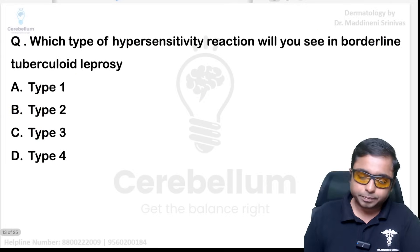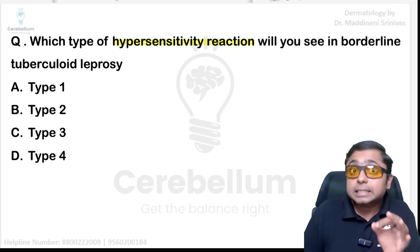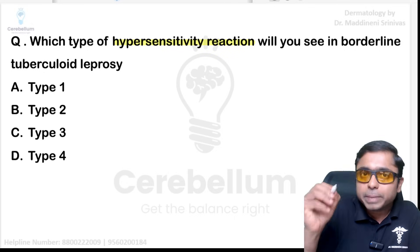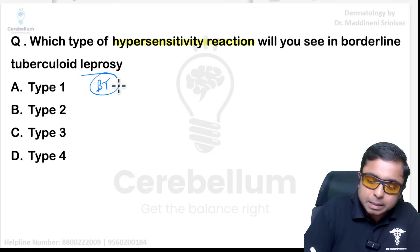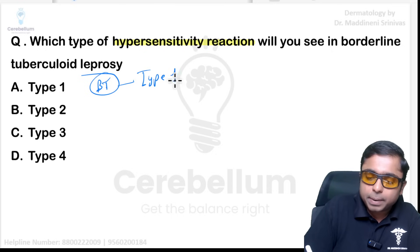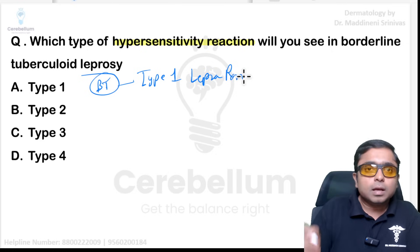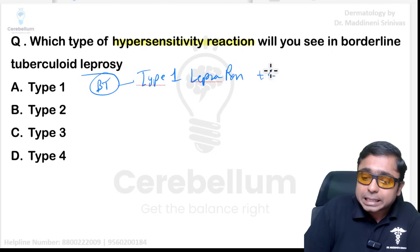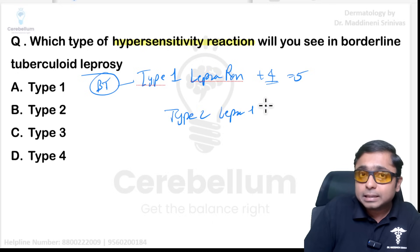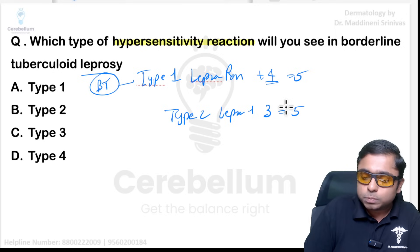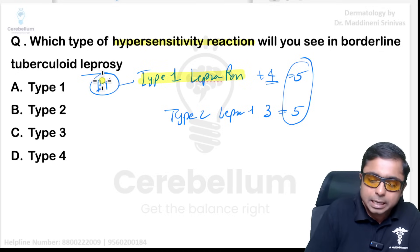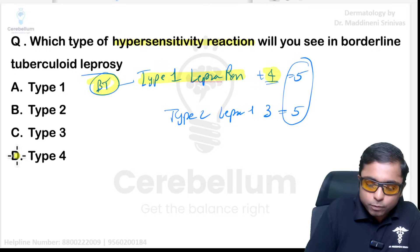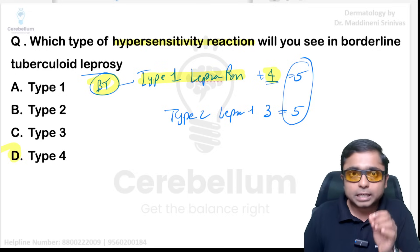Next: the examiner asked which Gell and Coombs hypersensitivity reaction is seen in BT leprosy. In BT leprosy, patients get type 1 lepra reaction. Remember: 1 plus 4 equals 5 — type 1 lepra reaction is type 4 hypersensitivity (Gell and Coombs), while type 2 lepra reaction is associated with type 3 hypersensitivity. Since BT leprosy commonly shows type 1 lepra reaction, the answer is type 4 hypersensitivity.